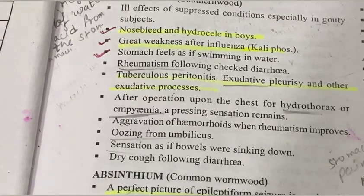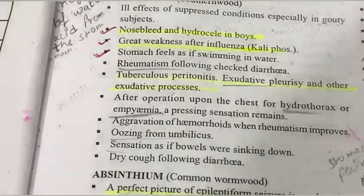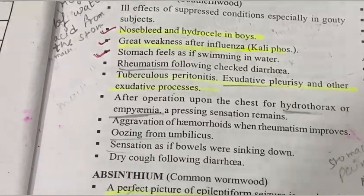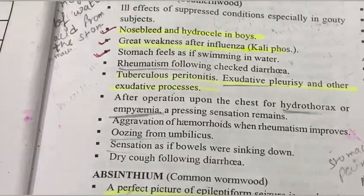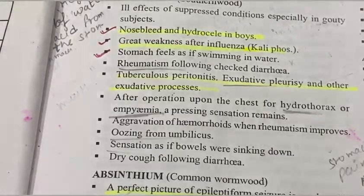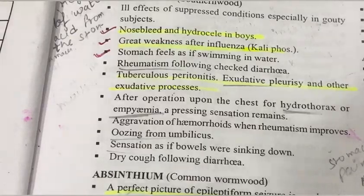The next indication is tuberculosis, peritonitis, exudative pleurisy, and other exudative processes where water accumulates in the abdomen due to tuberculosis bacterial infection. To reduce this condition and help the accumulated fluid disappear or dry up, Abrotanum is used.